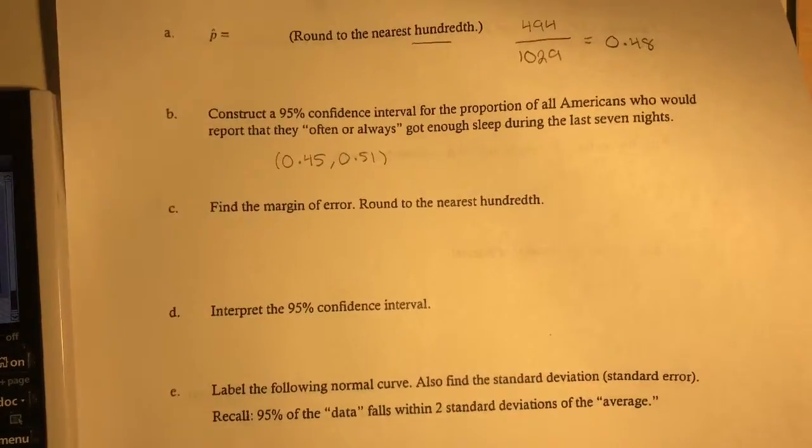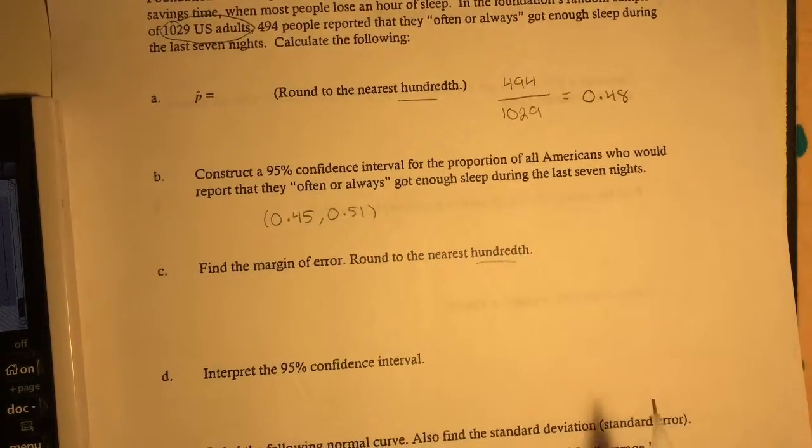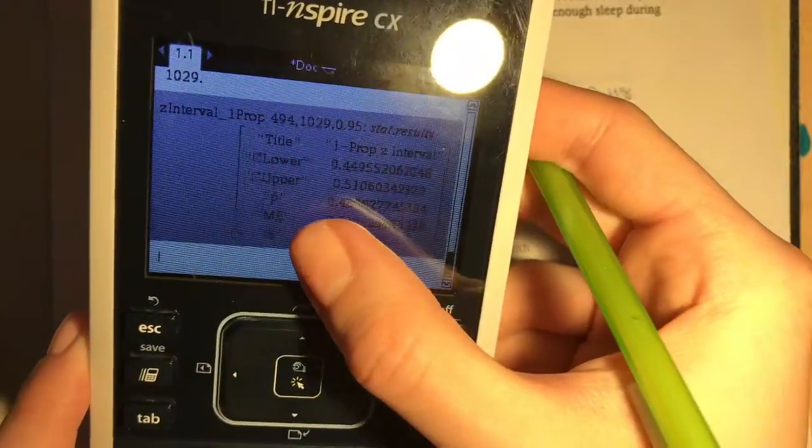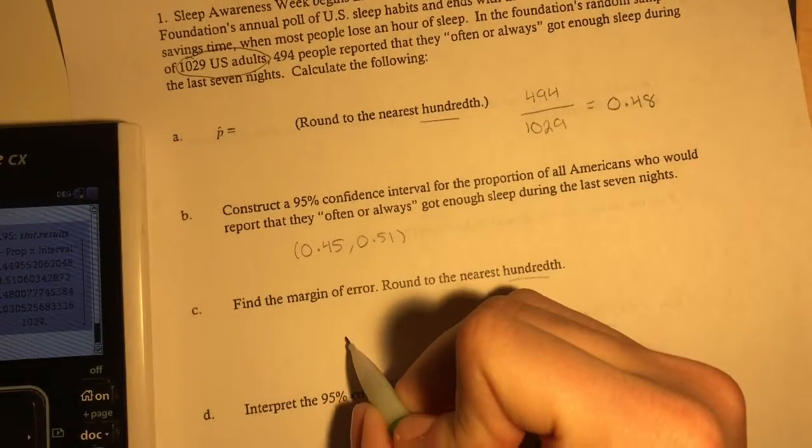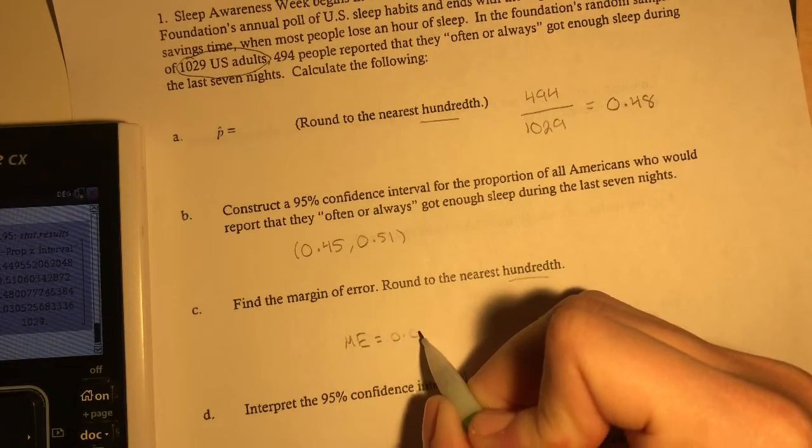And now it says find the margin of error, round to the nearest hundredth. Always underline where you're going to round to. And wonderfully enough, on the calculator, it gives us our margin of error, which is ME. So ME equals 0.03.